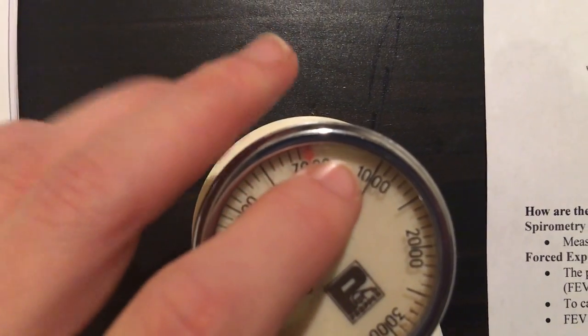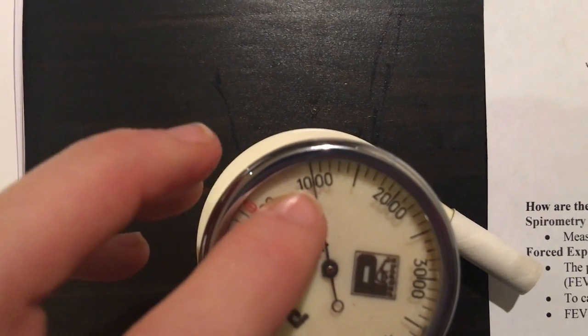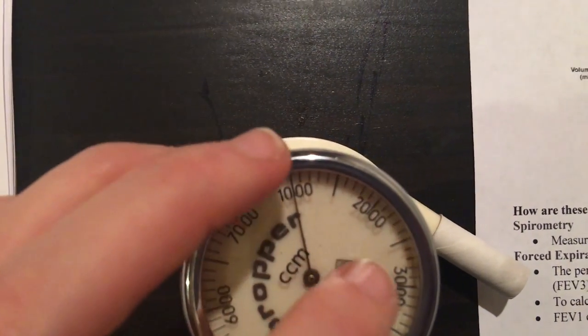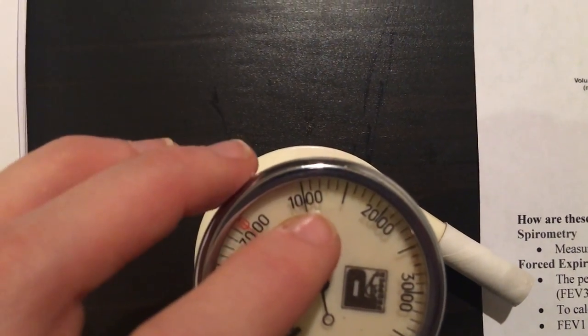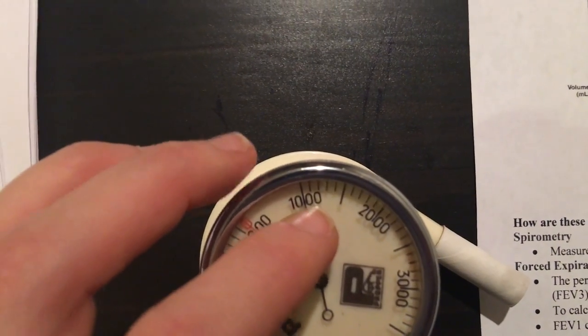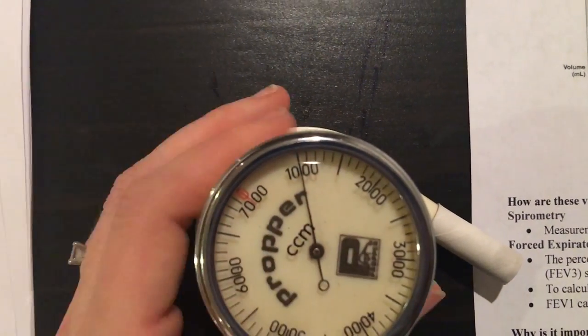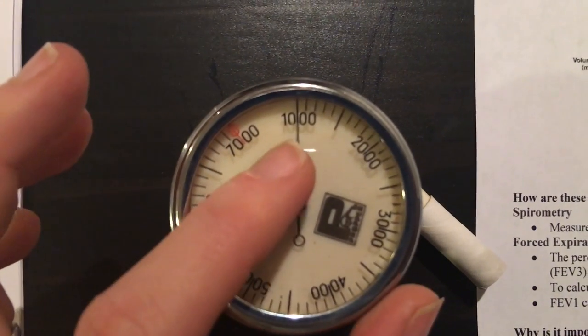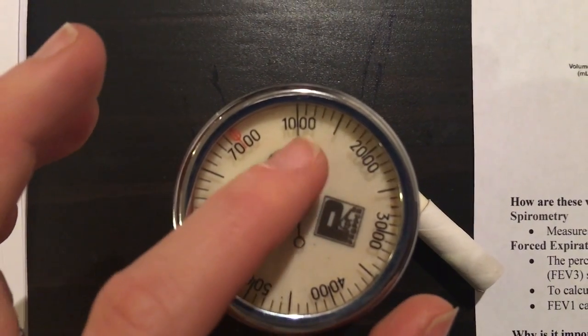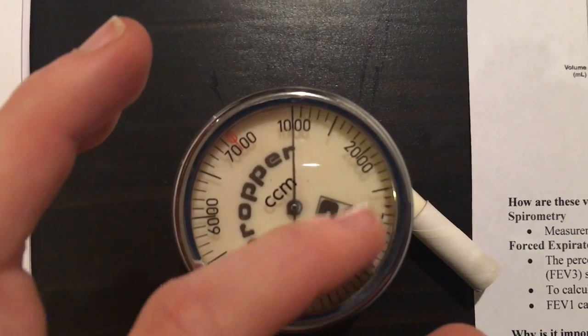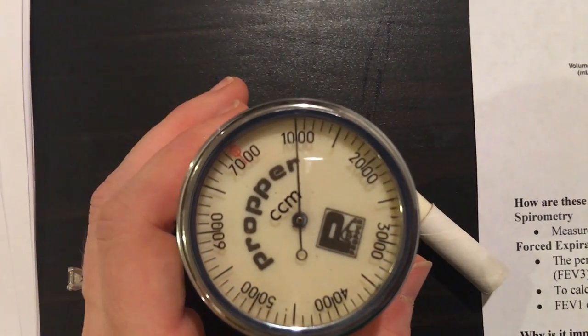When you breathe out, it will measure the volume in milliliters starting at 1000, 2000, 3000, which you can also convert to liters: one liter, two liters, three liters, four liters. It kind of looks like the face of a watch, and this hand will move around depending on the volume of air that you push through the spirometer.